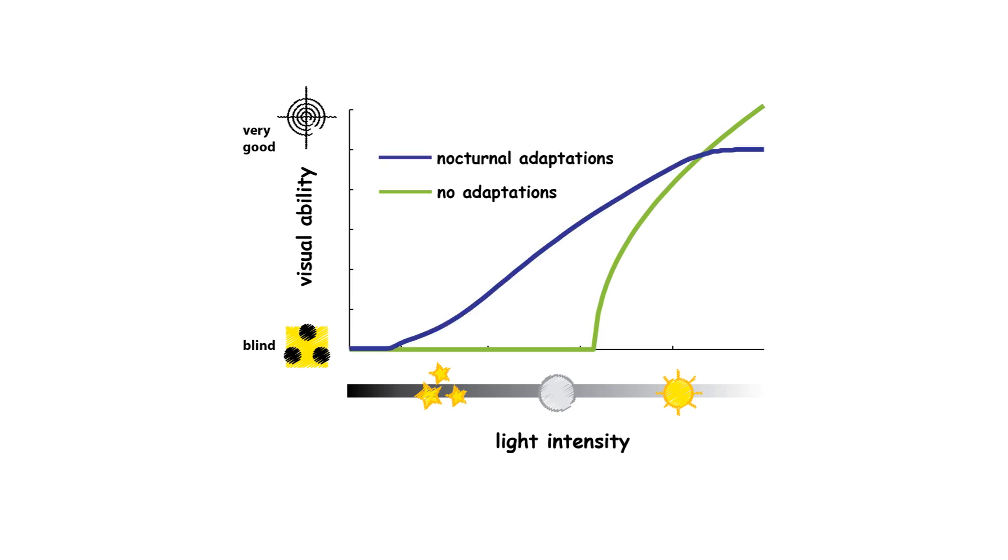If we account for adaptations for nocturnal vision, we see that sensitivity down to starlight levels is gained. And this explains why moths can easily fly at night, and why they are also able to go for yellow t-shirts.